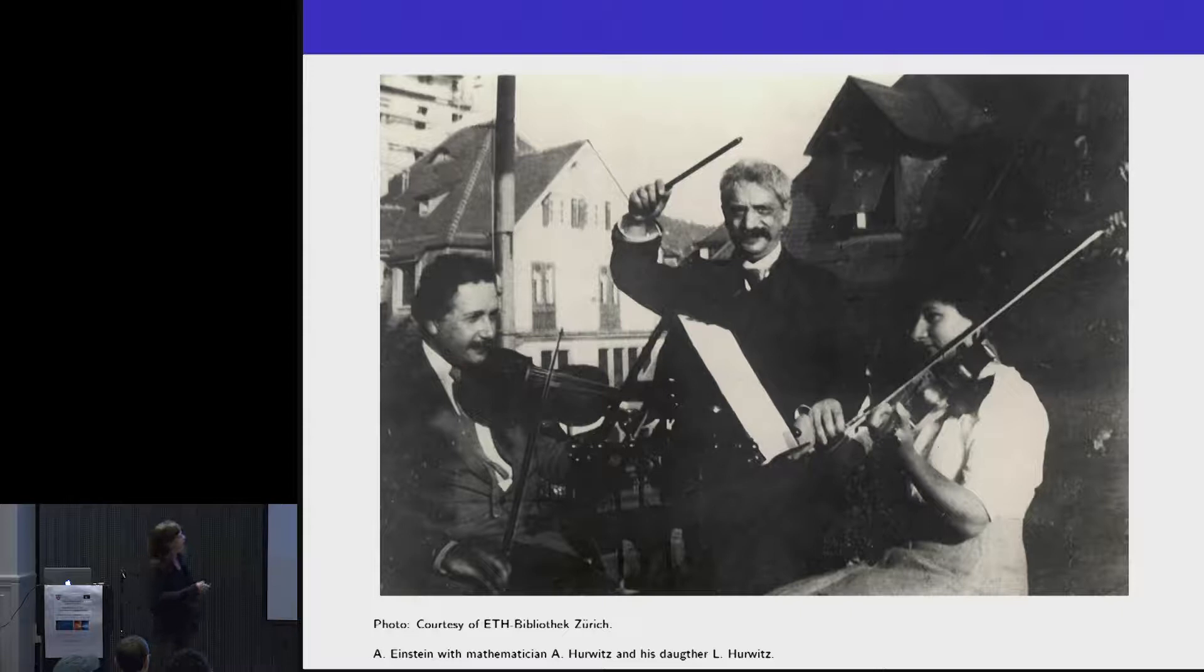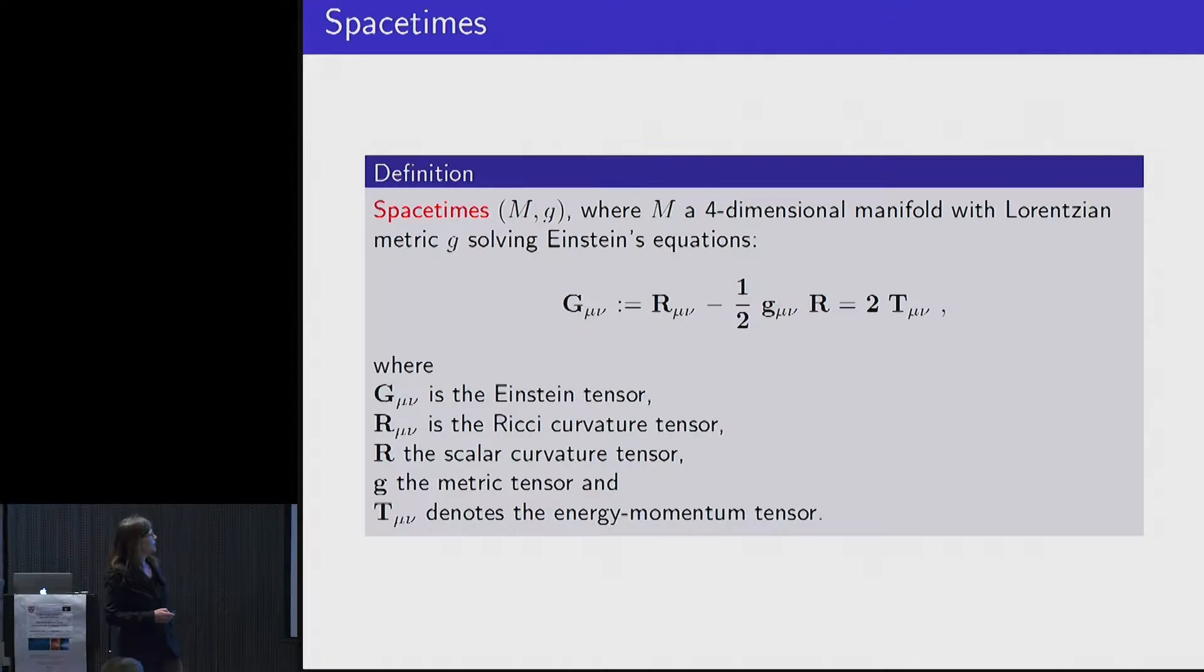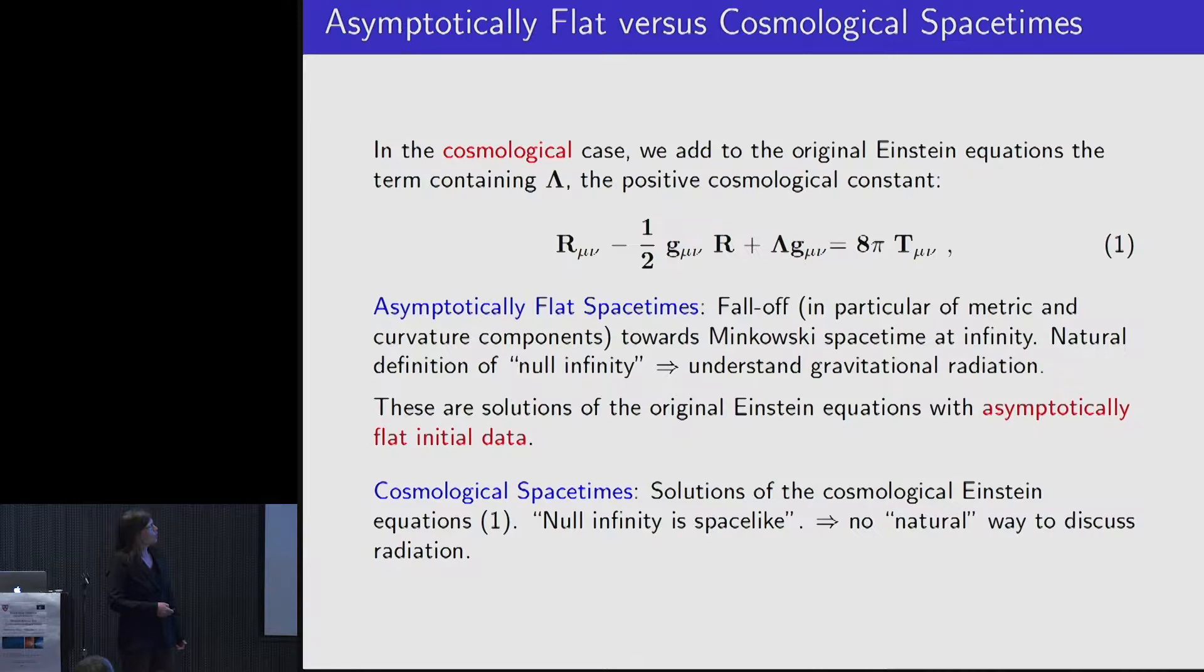Let me start with some pictures. This is Einstein, he used to play violin a lot, together with the mathematician Horwitz and Horwitz's daughter. I thought I'd bring in a different aspect of Einstein also. So here are Einstein's equations, and we all know and cherish them. We have on the left-hand side the geometric quantities, curvature and the metric, and on the right-hand side, we plug in whatever fields we are dealing with, like electromagnetic fields, fluids, and also give the equations for this system.